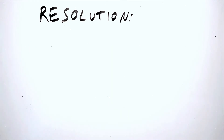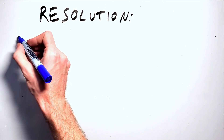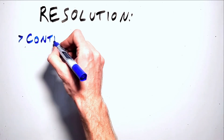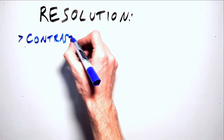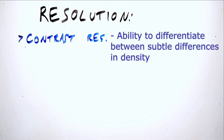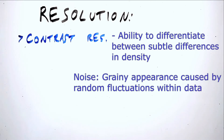These concepts carry us directly into the discussion on contrast resolution, because noise is the main detractor from the contrast resolution of our image. With contrast resolution we're interested in subtle differences in grayscale of our image, and noise is this grainy, fuzzy, random fluctuation in the values of that grayscale, so anything that increases the noise is going to detract from our contrast resolution.